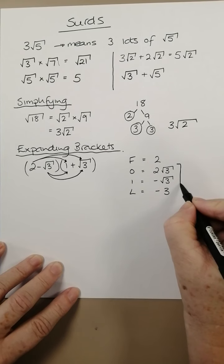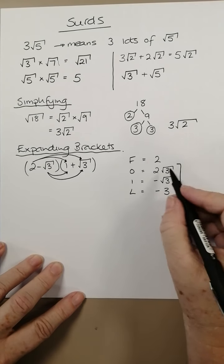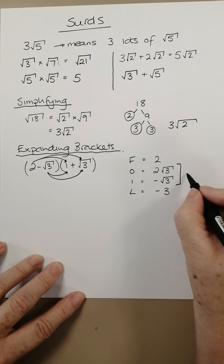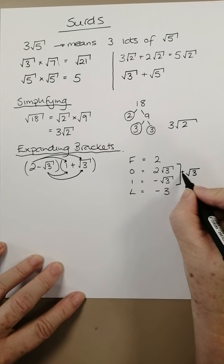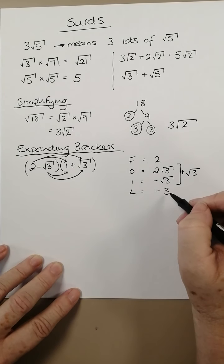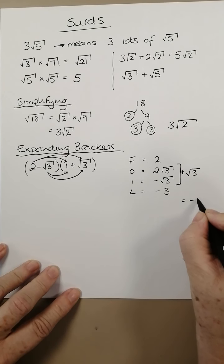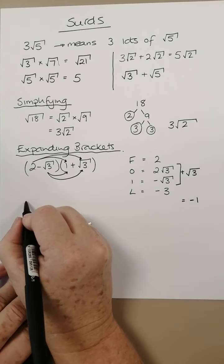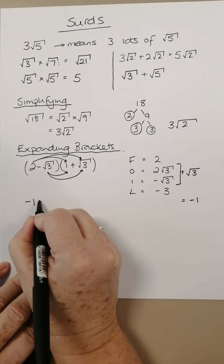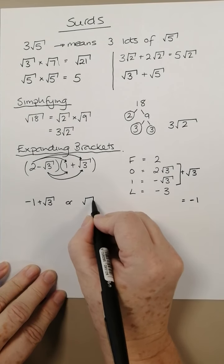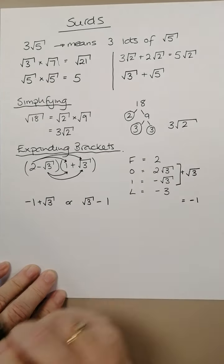Tidying up here we can tidy this up. We've got two lots of root 3, take away one lot of root 3, so that just leaves us with one lot of root 3, and it's positive. And we've got 2 take away 3, so that leaves us with minus 1 overall. So the final answer is either minus 1 plus root 3, or root 3 minus 1.